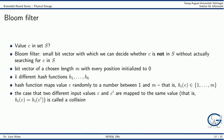Next, we need k different hash functions. Each hash function maps the input value c to a number between 1 and m. It might happen that two different input values c and c' are mapped to the same value. This case is called a collision.